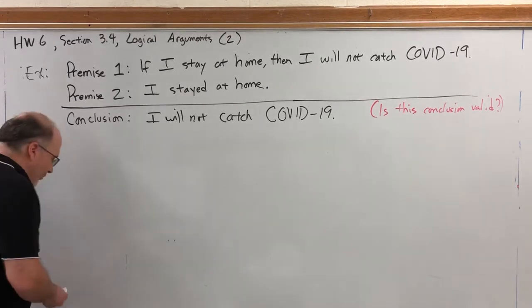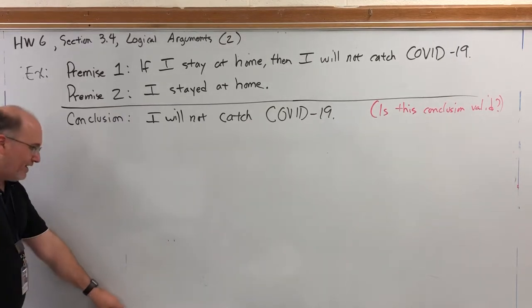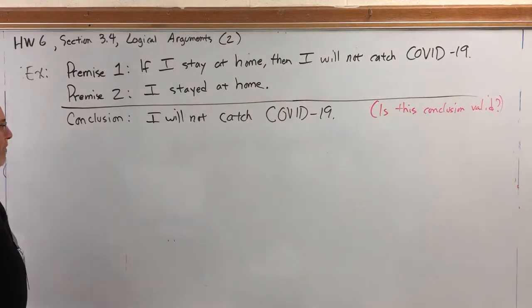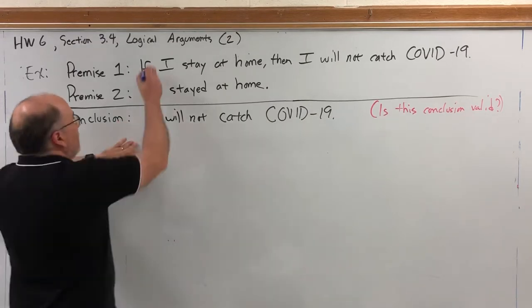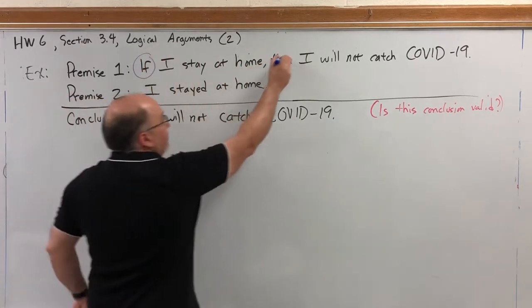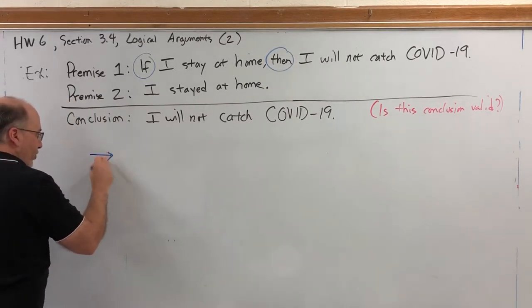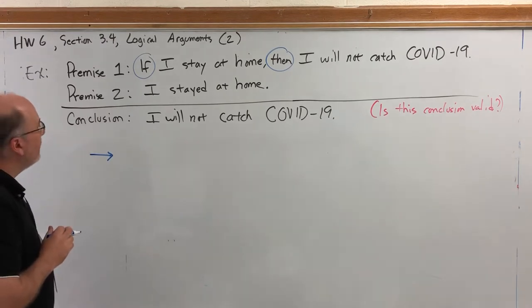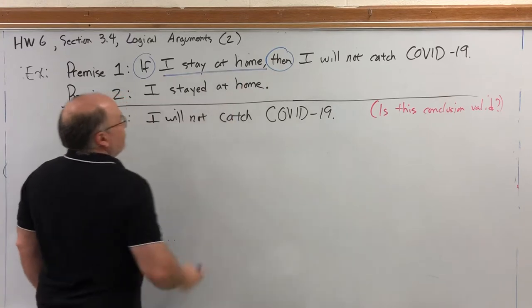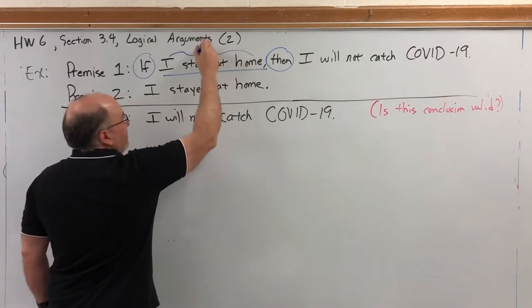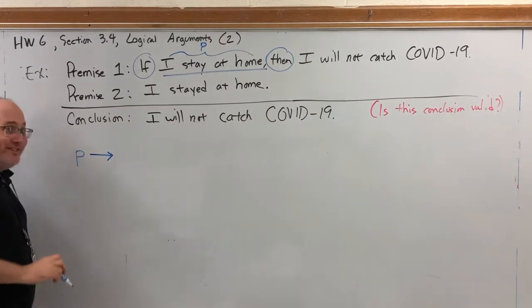Well, let's start by writing these statements symbolically. And in order to write them symbolically, we need to find our simple statements and represent them with single letters. In the first premise, it's a conditional, because of the if-then. So, I already know that the first premise is going to be something pointing to something. The first simple statement is between the words if and then. So, we're going to define P to be the simple statement, I stay at home. The antecedent, if you will.